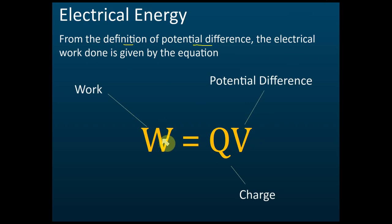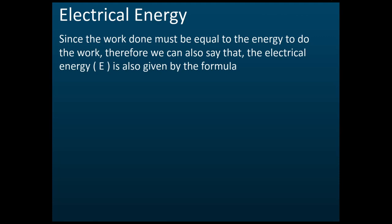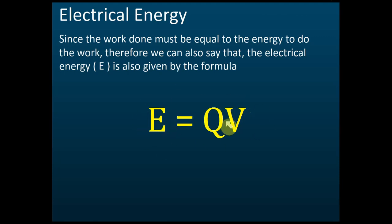In Form Four we learned that the amount of work done is equal to the amount of energy used to do the work, because we need energy to do work. How much work done equals how much energy used. Therefore we can also write E = QV, because the amount of work done and the amount of energy used is the same.